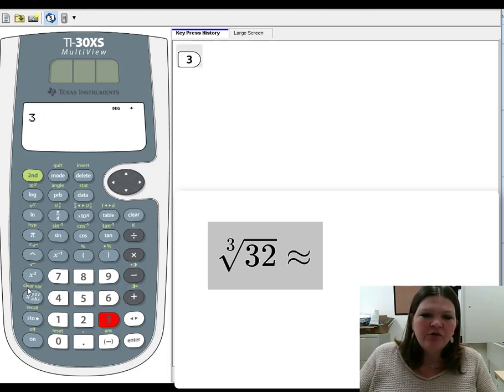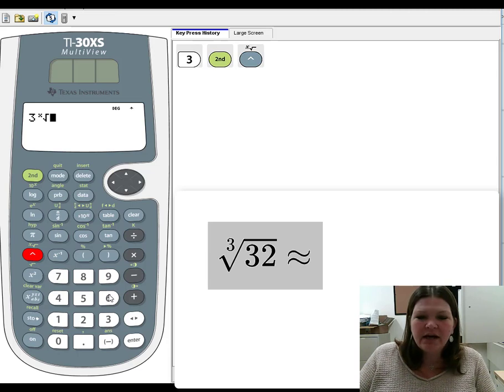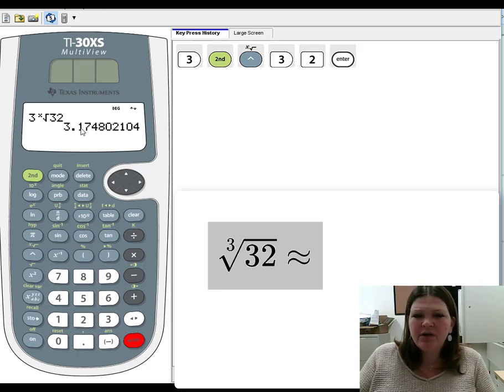So I'm going to put that 3 in first. Now cube roots are right above square roots. In green it says the Xth root. That's what we want. And so I'm going to go ahead and press the second button because it's in green and then pick up that Xth root. And I type in 32. Okay. So the cube root of 32, press enter and it gives me 3.17.